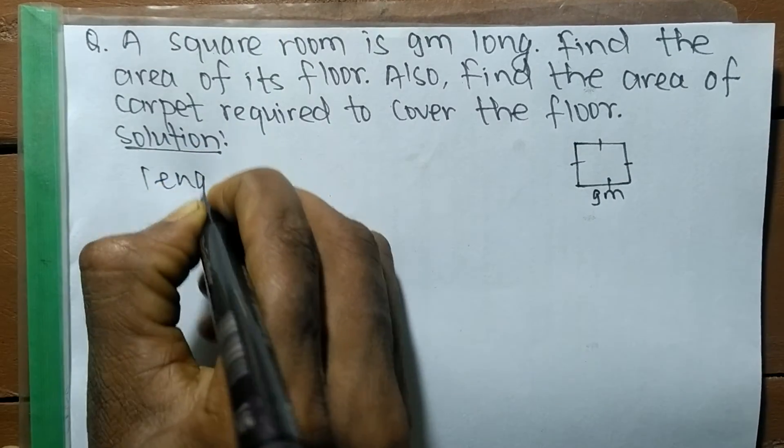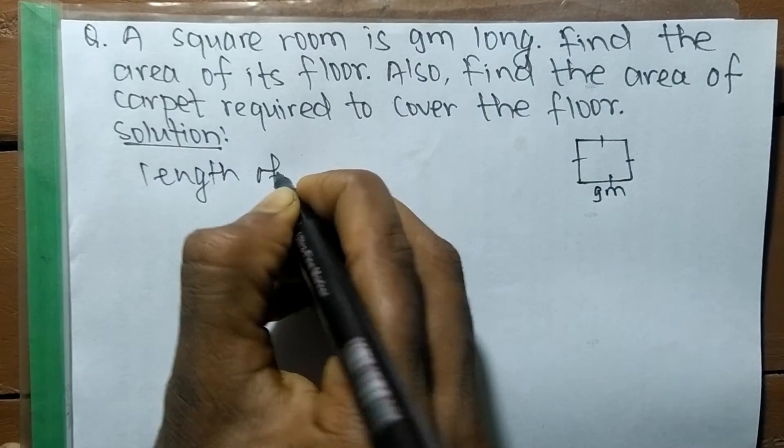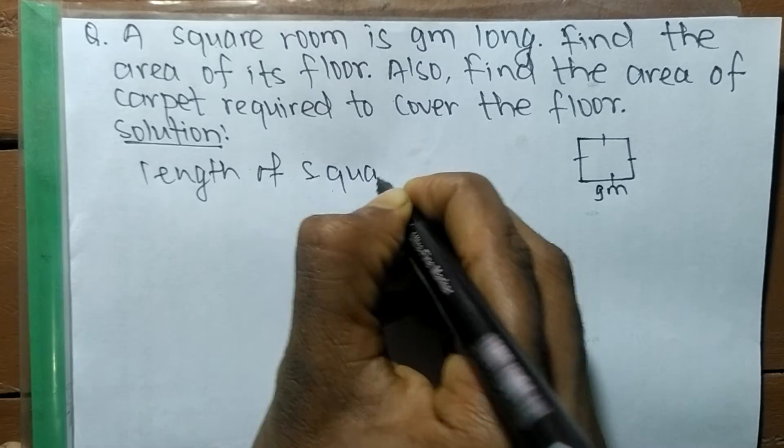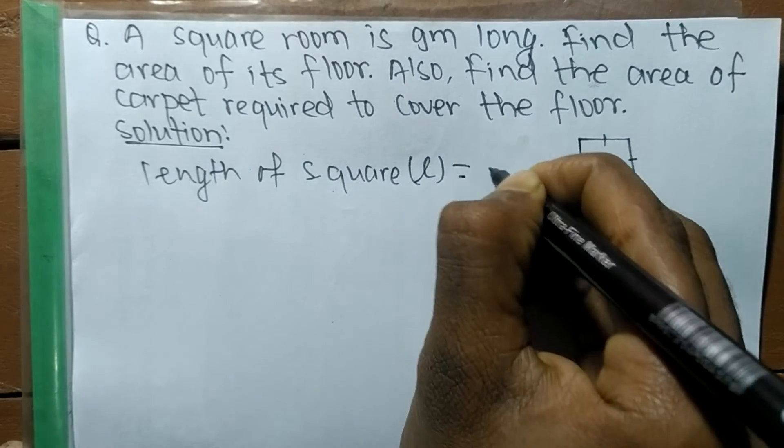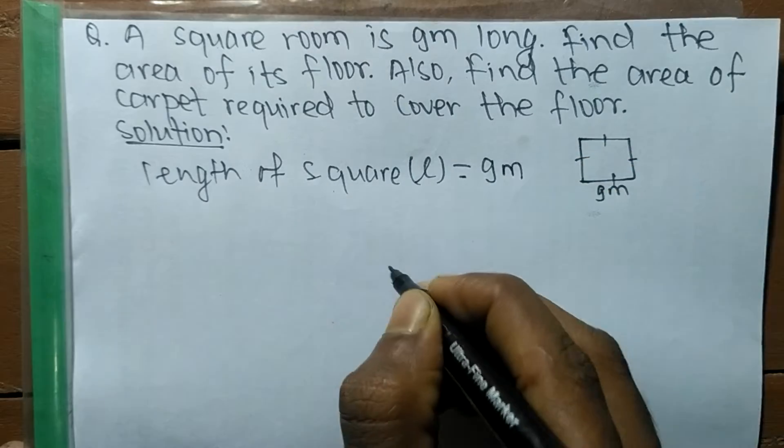We have given the length of a square, so we denote it by L = 9 meters.